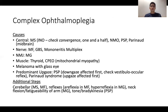A complex ophthalmoplegia is one that cannot be fully explained by a single cranial nerve pathology of 3, 4, or 6. You can think of it in terms of central versus peripheral causes, whether it's predominantly vertical versus horizontal, or mixed with no specific pattern. For central causes, consider multiple sclerosis and assess whether the ophthalmoplegia fits a specific pattern of INO or 1.5 syndrome. Neuromyelitis optica and progressive supranuclear palsy with associated Parkinsonism features are also central causes.